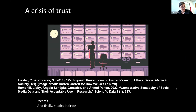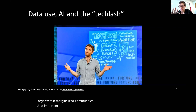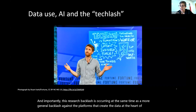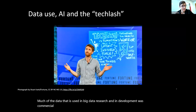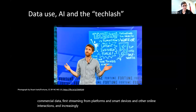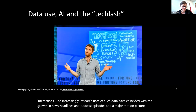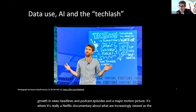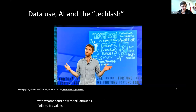Studies indicate that trust issues in digital data research may be even larger within marginalized communities. And importantly, this research backlash is occurring at the same time as a more general backlash against the platforms that create the data at the heart of much data science and AI development. Much of the data used in big data research was commercial data first, streaming from platforms and smart devices and other online interactions. Research uses of such data have coincided with growing news headlines and a Netflix documentary about what are increasingly viewed as the ethical failings of big tech.